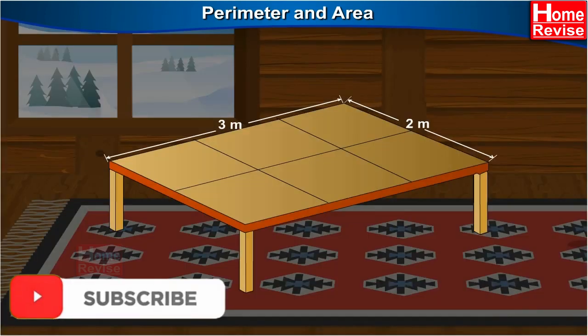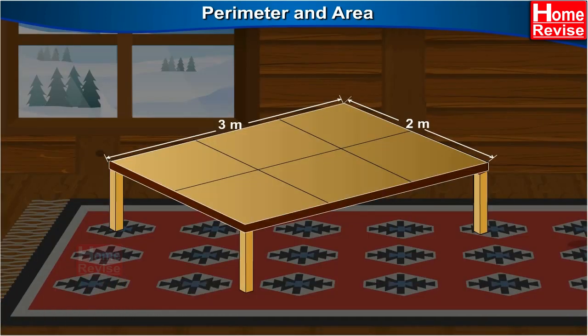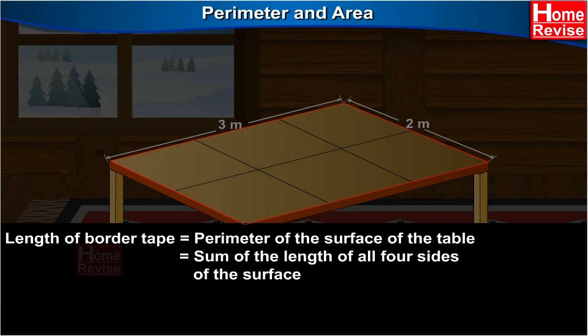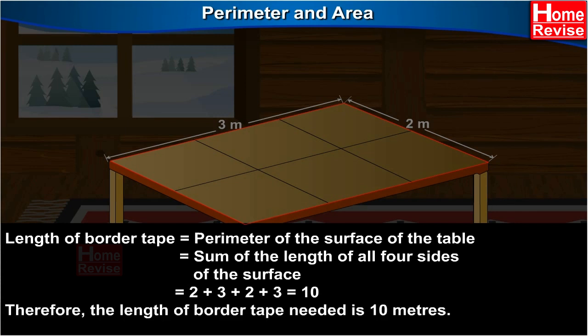Now, let us find the length of border tape. The length of border tape is equal to the perimeter of the surface of the table, which is equal to the sum of the length of all 4 sides of the surface. So, it is 2 plus 3 plus 2 plus 3, which is equal to 10. Therefore, the length of border tape needed is 10 meters.